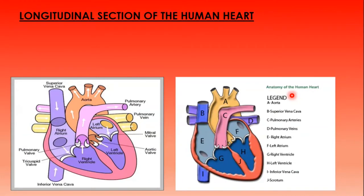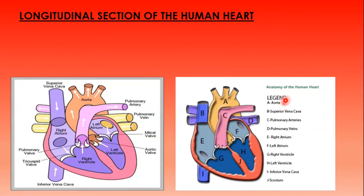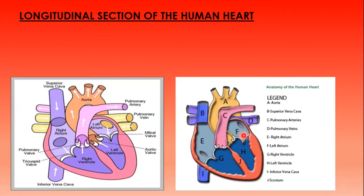We have two of the same diagrams labeled differently. The first provides direct labeling of the parts. The second uses letters with a legend or key for interpretation. You can draw either of these structures and be marked correct. In an exam, you are not supposed to paint them — just draw and label the parts.